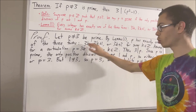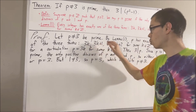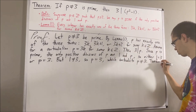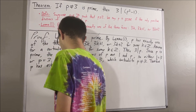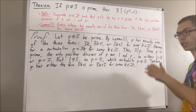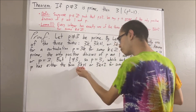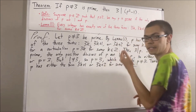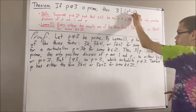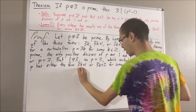So we only have two possibilities left: either p has the form 3k plus 1 or 3k plus 2 for some integer k. What we're going to do is prove that whether p has this form or that form, it is in fact true that 3 is a divisor of p squared minus 1. Let's start with Case 1, where p has the form 3k plus 1.